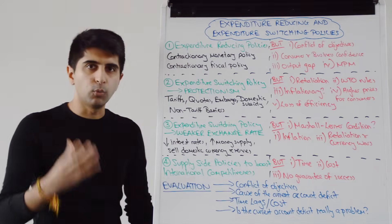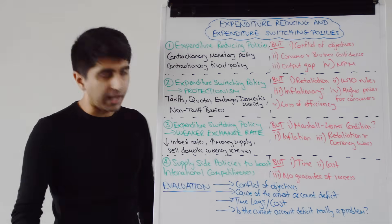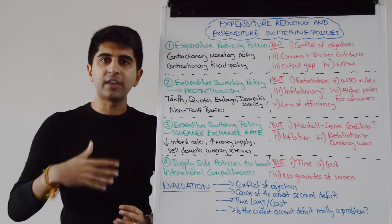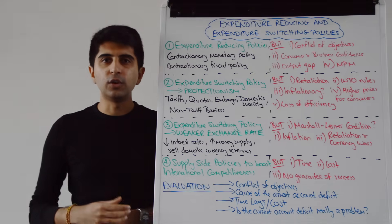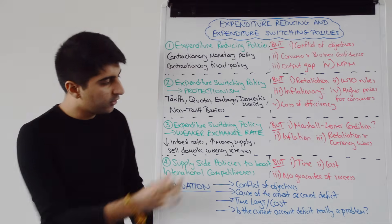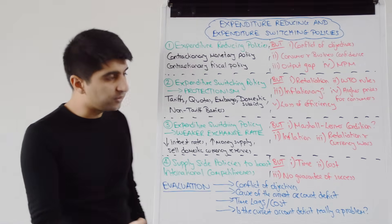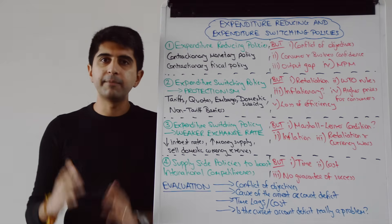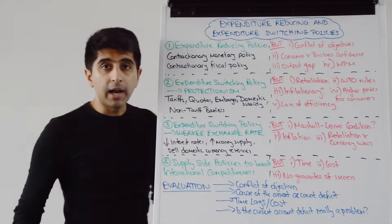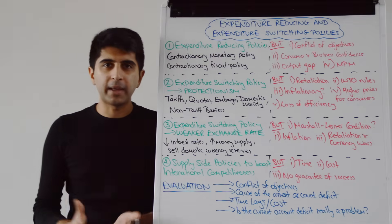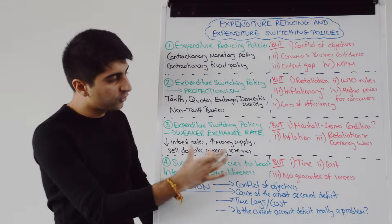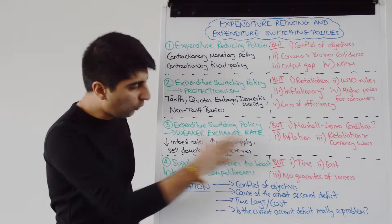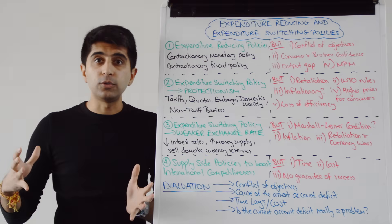How can a government actually weaken the exchange rate? It would be the central bank — by reducing interest rates, there is a hot money outflow as investors look to other countries where interest rates are higher, reducing the exchange rate. An increase in the money supply through quantitative easing also reduces the value of the exchange rate. Or the central bank could sell domestic currency reserves — by selling their own currency and buying foreign currency, they create extra supply of their own currency which reduces its value. All three of these will, in theory, reduce the value of the exchange rate and help reduce the current account deficit.